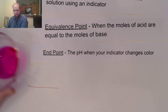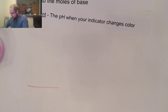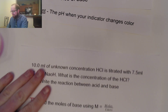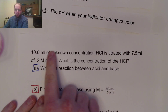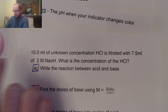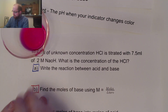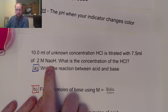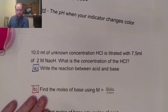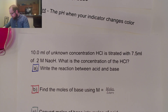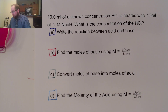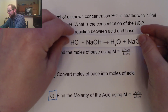Now let's take a look at some of the basic calculations we can do with this. Let's say, for example, I have an unknown concentration of HCl. I started with 10 mL in my little dish, and I added 7.5 milliliters of 2 molar NaOH. The question is: what is the concentration of this HCl? You have a couple of different steps to take. The first step is to write the reaction between an acid and a base.